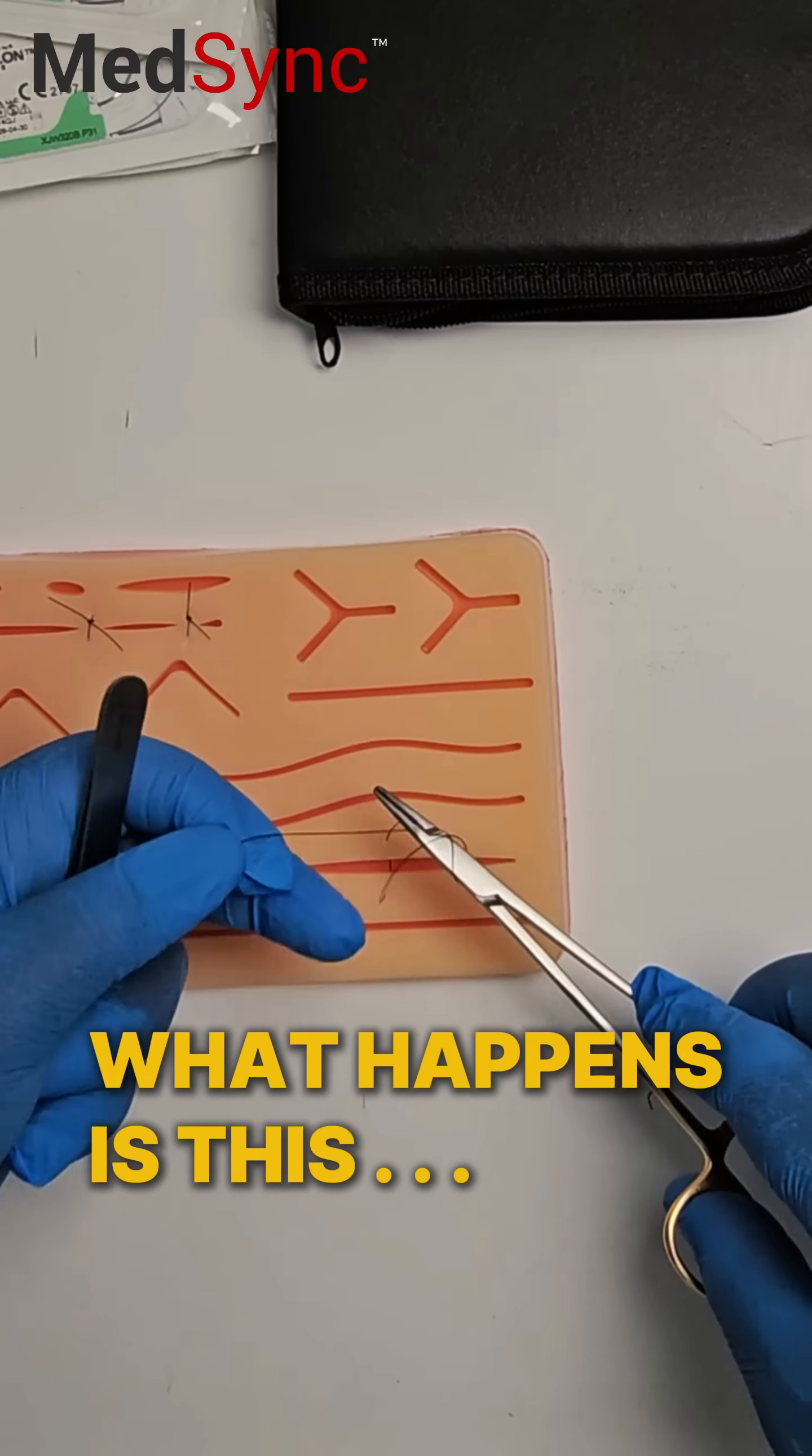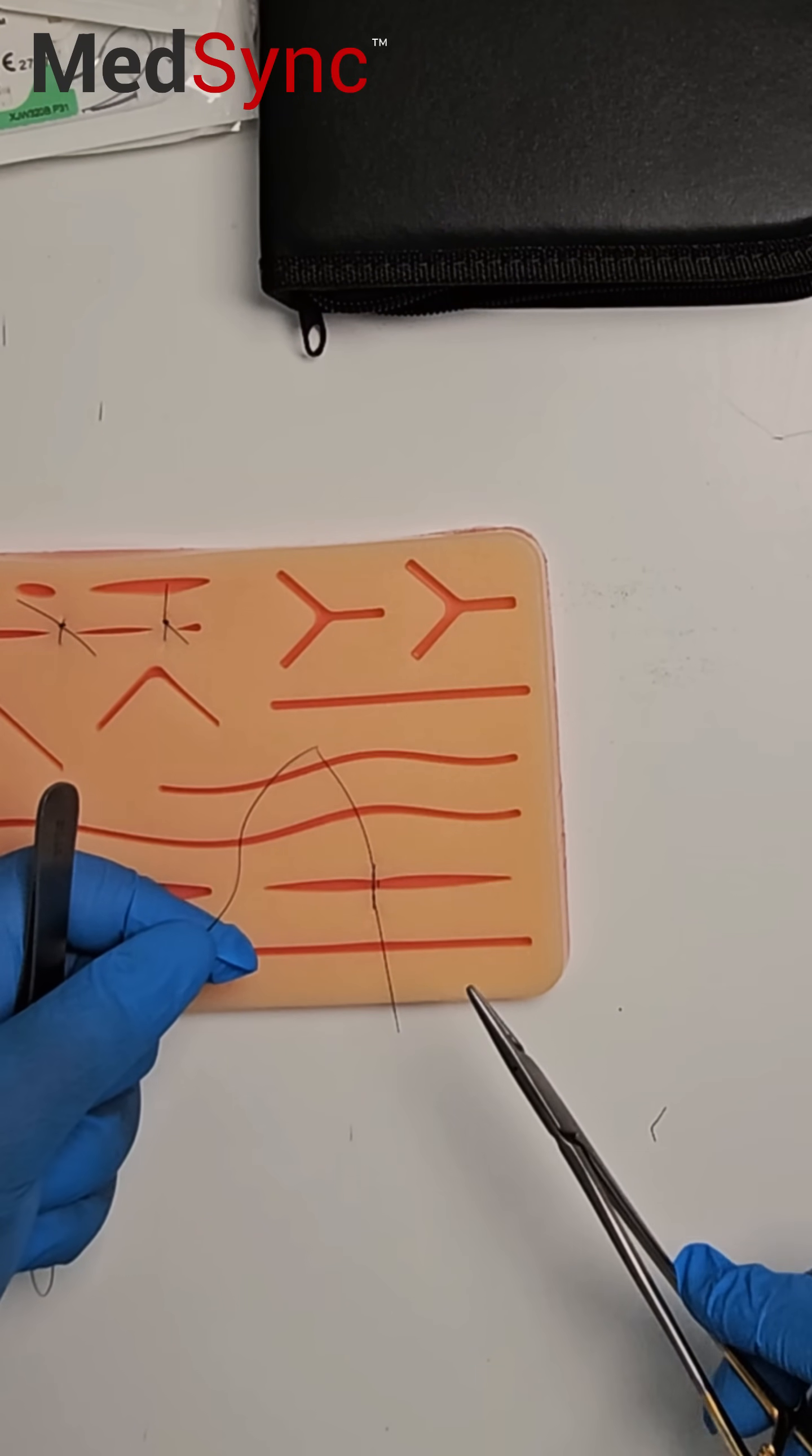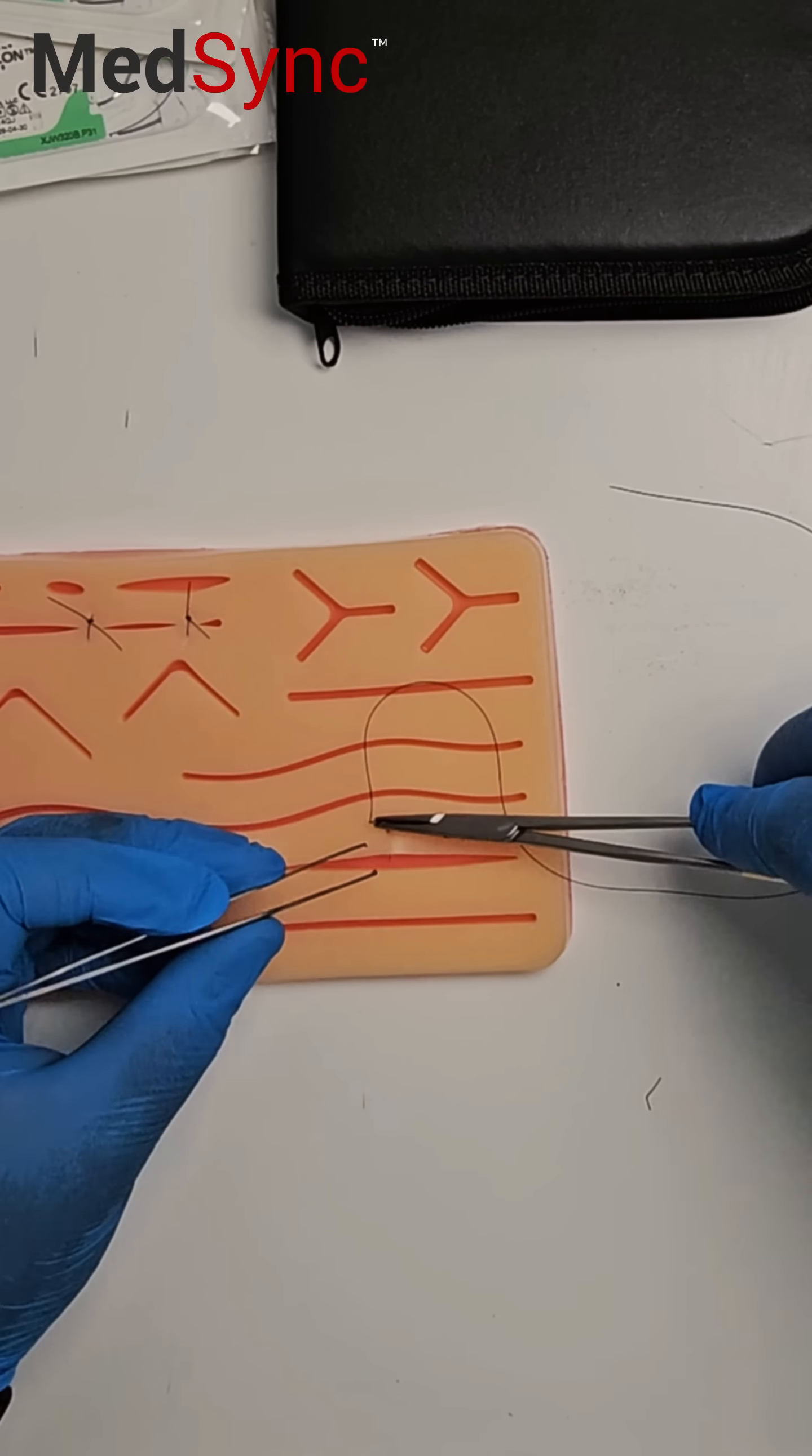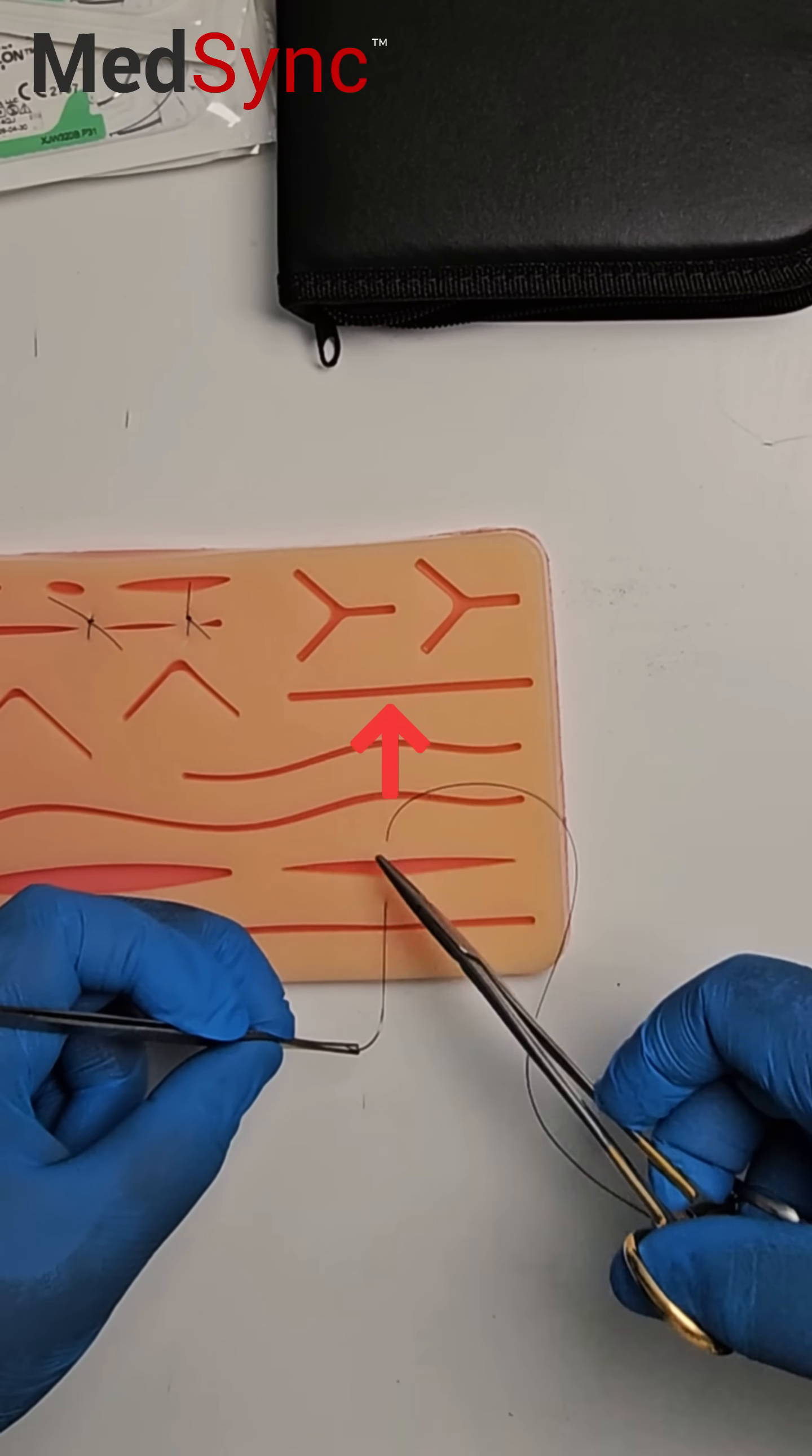So what happens is this. You tie your knot and it loosens like that. So you have three options. What would happen is you've got a wound like this trying to put a stitch in and you've got distracting forces pulling the wound this way and this way.